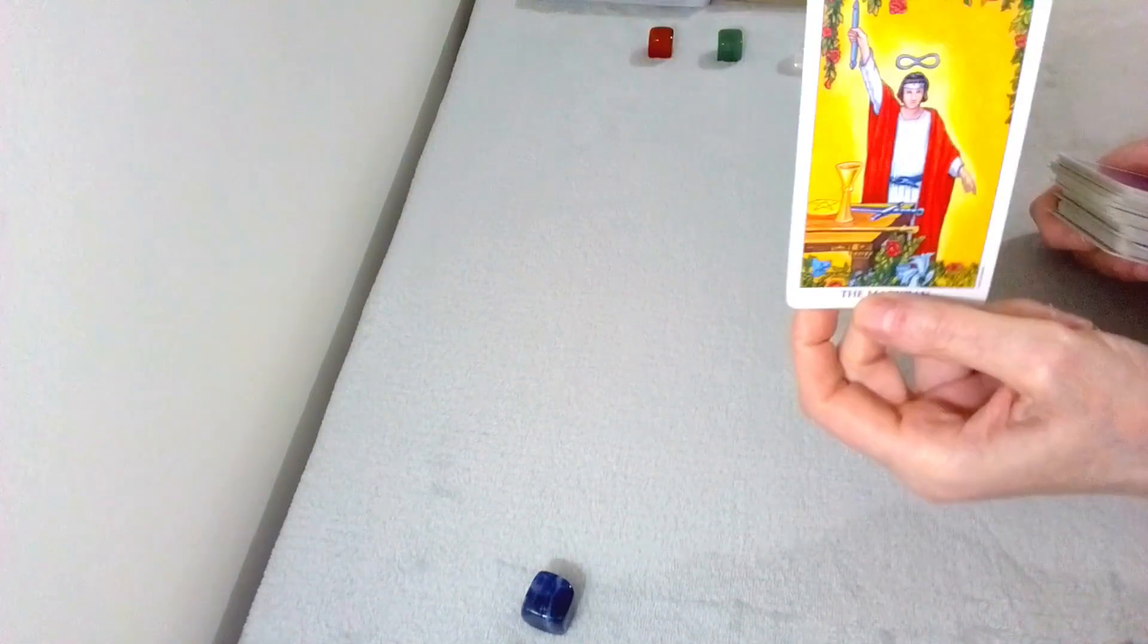So I'll jump straight in and I'm using the Radiant Rider Waite Tarot deck for your reading. And the first card out for you is the Magician.